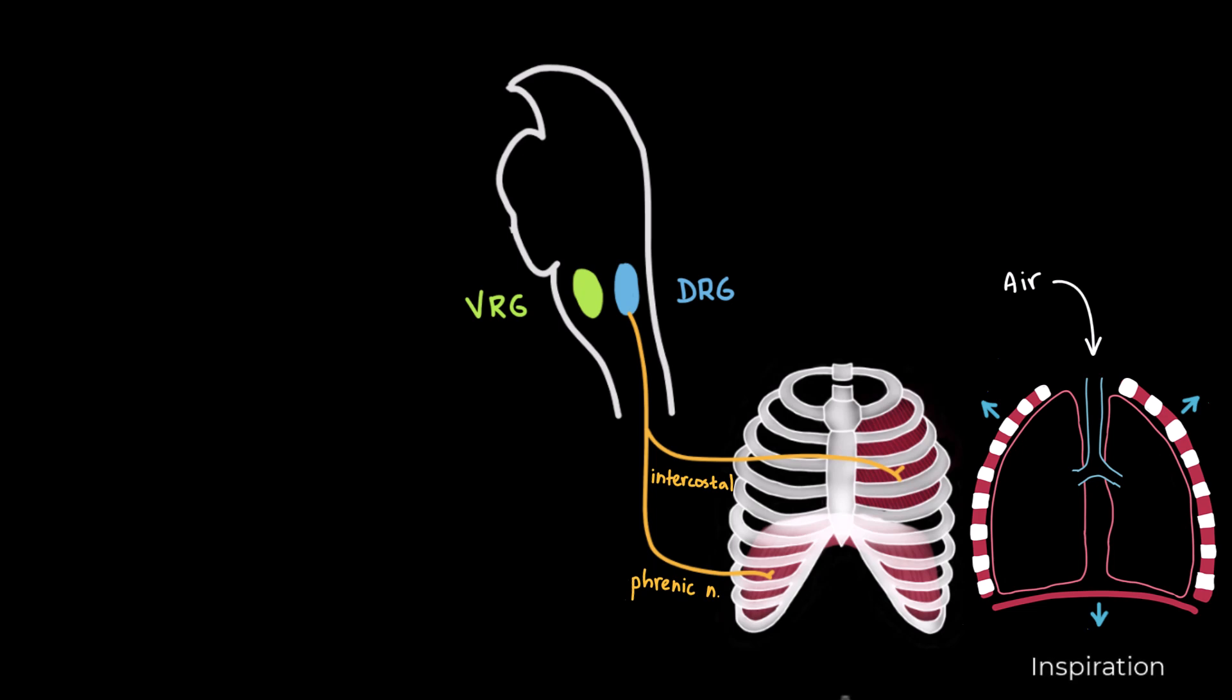increasing thoracic volume and drawing air into the lungs. And that's how inspiration is started. So, in short, the dorsal respiratory group sends signals to the inspiratory muscles, allowing us to breathe in.